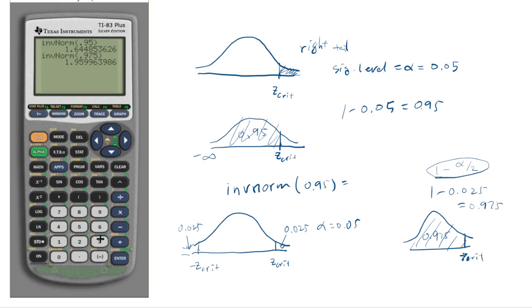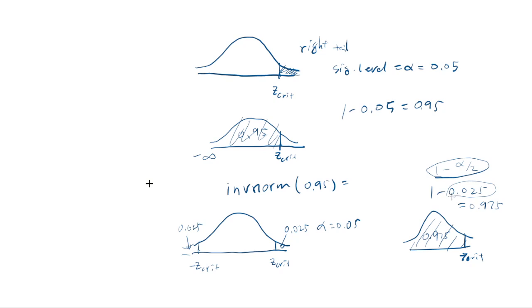However, if you understand what we're doing, you can also just use 0.025 directly — instead of 0.975, do inverse norm of 0.025. What happens is that it gives you the negative value, so you didn't have to convert it. But then the value you get is negative 1.96 rather than positive 1.96, so you'll have to know that the positive one is 1.96.